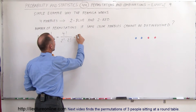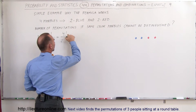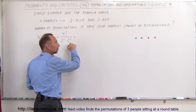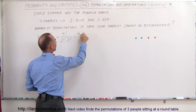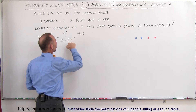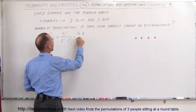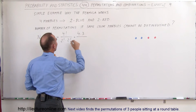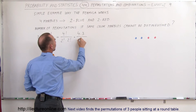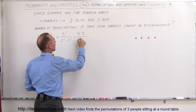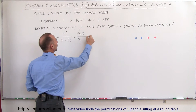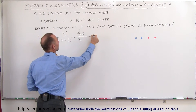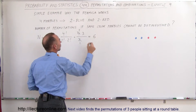So this is going to be 4 factorial divided by 2 factorial — that would be 4 times 3 because 2 times 1 is cancelled out — divided by 2 factorial, which is 2. Then the 2 and the 4 reduce, so this is 2 times 3, which is equal to 6.